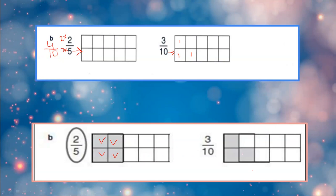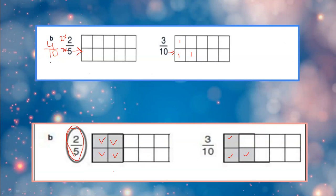I am coloring 3 boxes and leaving 7 parts colorless. Now the grid shading part is done and we compare which is greater: 3 upon 10 or 2 upon 5. Basically 2 upon 5 is 4 upon 10. Both having the denominator 10, we compare the top number. 4 is greater, so we circle 2 upon 5.